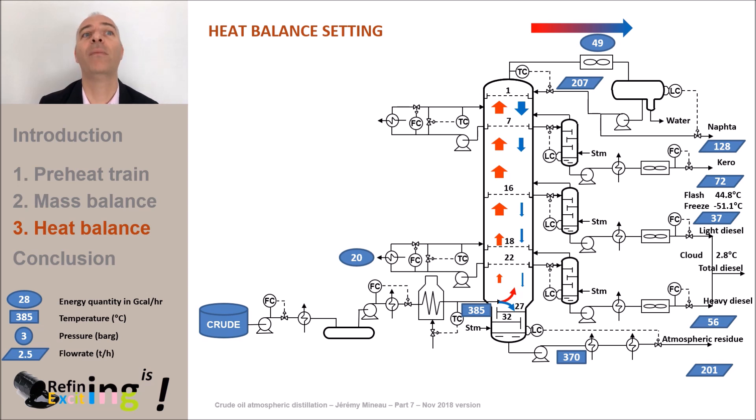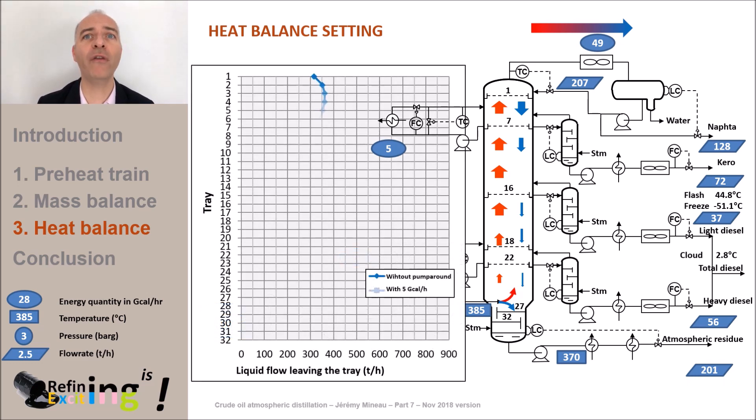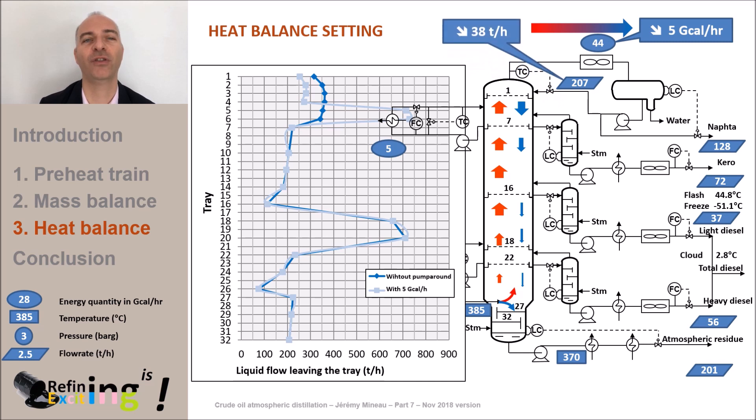Let's start by removing 5 gigacalories per hour. Same consequences as for the bottom pump around, the liquid flows above the pump around zone are reduced as the duty removed from the condenser. We observe a reduction from 49 to 44 gigacalories per hour. It means precisely the 5 gigacalories per hour just removed and the reflux is also reduced from 207 to 169 tons per hour.